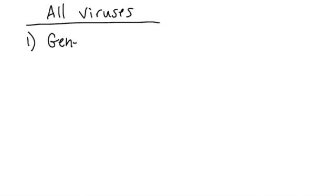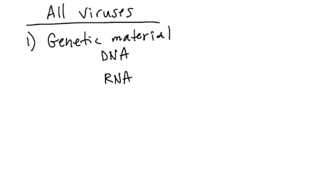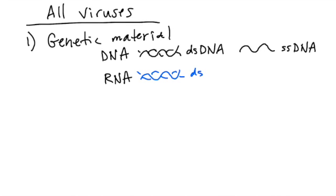All viruses have some form of genetic material. This can be DNA, or it can be RNA. No other life forms have an RNA genome. It can be double-stranded DNA, or it can be single-stranded DNA. It can be double-stranded RNA, or it can be single-stranded RNA.